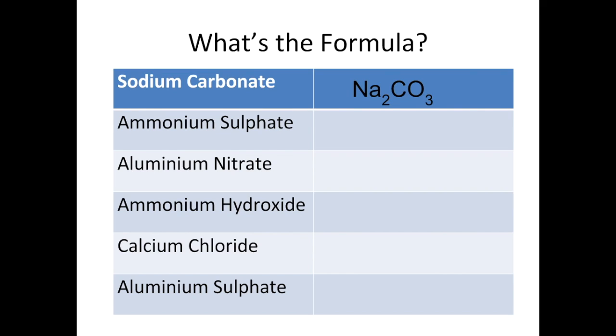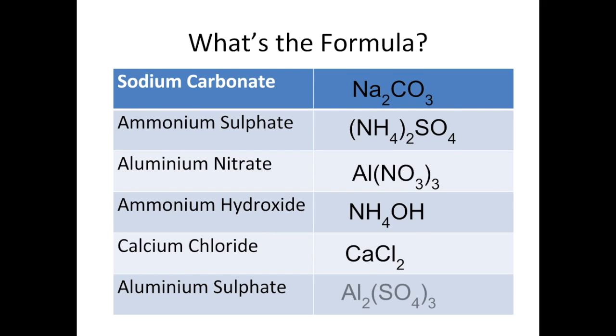Sodium carbonate is Na2CO3. Ammonium sulphate is NH4 in a bracket because we need 2 of those for every sulphate ion. So it's (NH4)2SO4. Aluminium nitrate is Al(NO3)3. Ammonium hydroxide, NH4OH. We just need 1 of each ion because they have the same charge. Calcium chloride, CaCl2 and aluminium sulphate, Al2(SO4)3. We needed to get the charges up to 6 plus and 6 minus to get them to cancel.